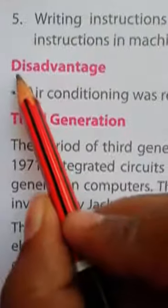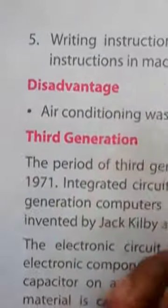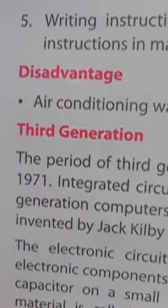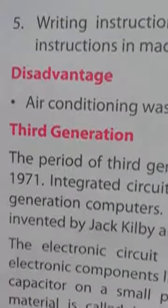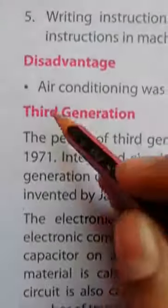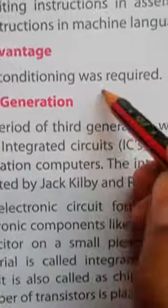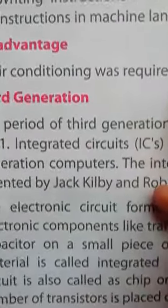Next part, disadvantage. Second generation के disadvantage को पढ़ते हैं कि second generation में क्या कमी थी. Air conditioning was required. Air conditioning की आवश्यकता थी.